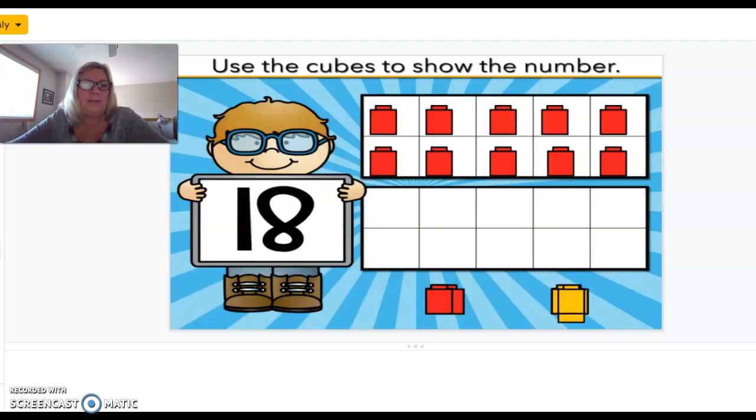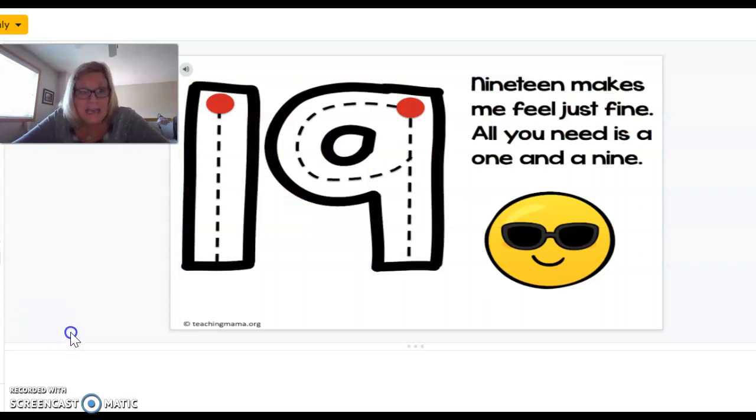All right. Now, let's look at the number 19. The poem says: 19 makes me feel just fine. All you need is a 1 and a 9. All right. Sky write with me. Straight line down for your number 1. And then make a circle and then a line. Good.